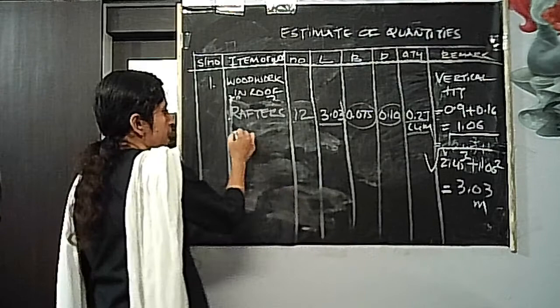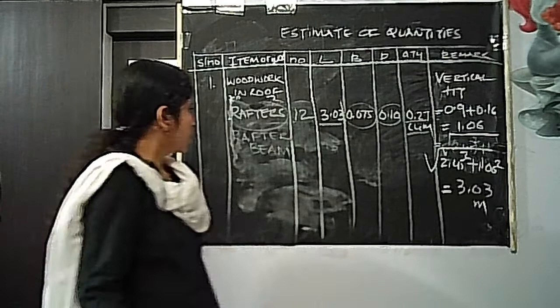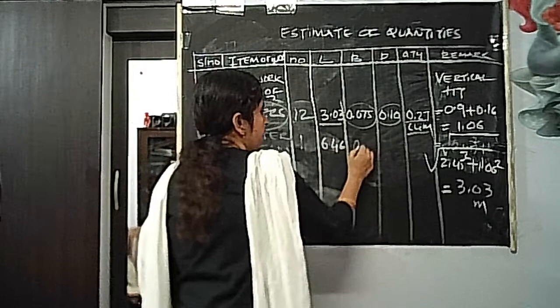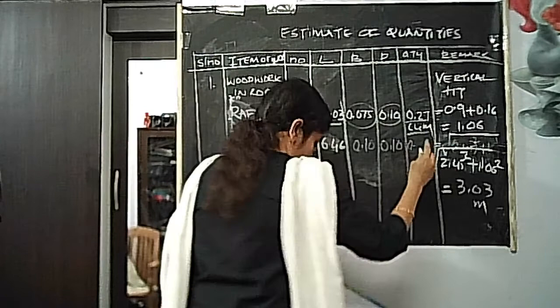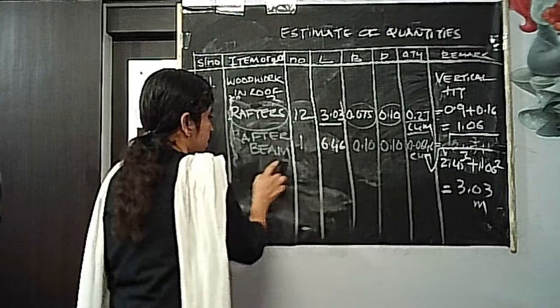Next, the rafter beam at the end: 1 in number, length 6.46 meters, cross section 10 cm × 10 cm (0.10 × 0.10 m). Volume = 1 × 6.46 × 0.10 × 0.10 = 0.0646 cubic meters.